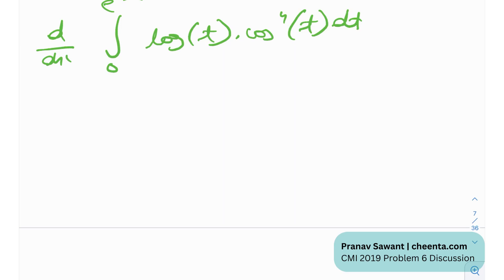So first of all, what we will get is, we'll essentially get ln of e raised to the power x, times cosine raised to the power 4, e raised to the power x. What did I do? I just replaced t with the upper limit e raised to the power x. Then, we will differentiate the upper limit.